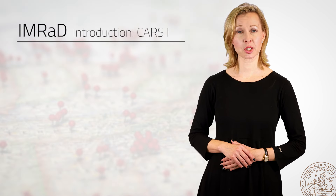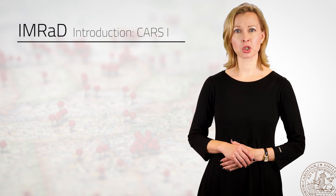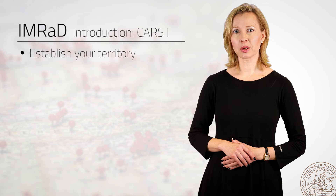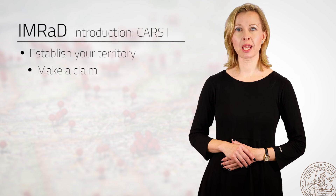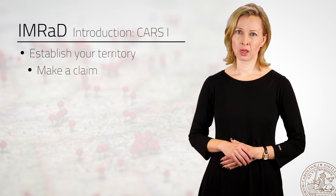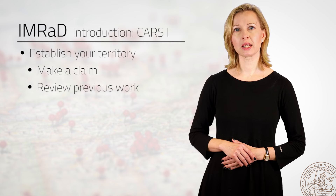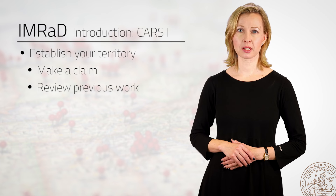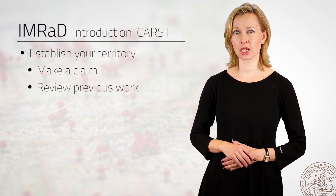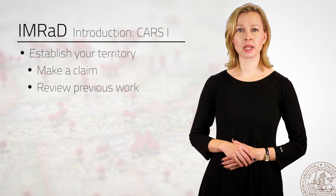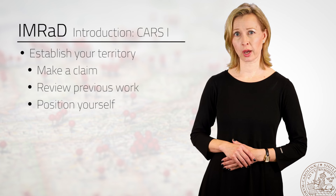According to the CARS model, the first move in an introduction should be to establish your territory. This often means making some sort of claim to centrality, which tells your reader why this area is interesting and worthy of research. Reviewing previous work that is of relevance and making general claims about your topic can also be considered part of staking out your territory. What you should aim to do at this stage is position yourself in relation to previous work.